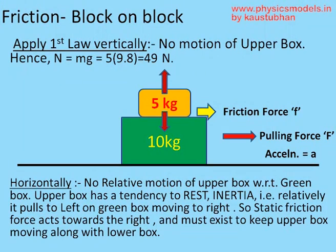In the horizontal direction, things become tricky. The green box is pulled by force F and accelerates at A. The upper box tends not to move, as per Newton's first law — all objects like to be static unless acted upon by an external force. Here the external force is the friction between the green box and the upper box, which is responsible for moving the upper box towards the right with the same acceleration A.